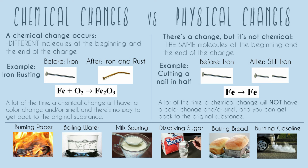You can just think about it — there is a big color change: we have whatever we have and it turned into ash or dust. And there's really no way, once you just have that ash or dust, to turn it back into paper. So burning paper — any type of burning — is going to be a chemical change.